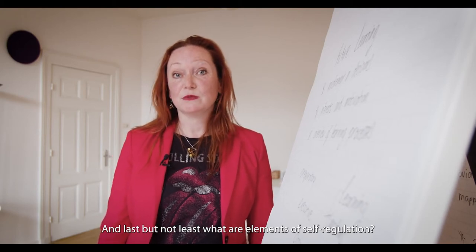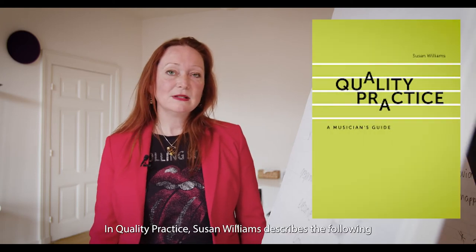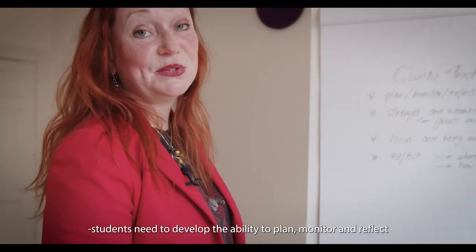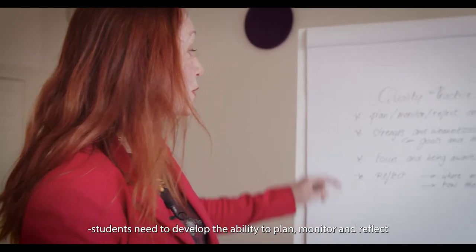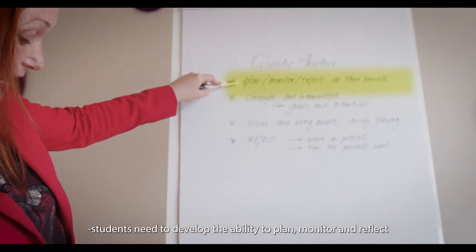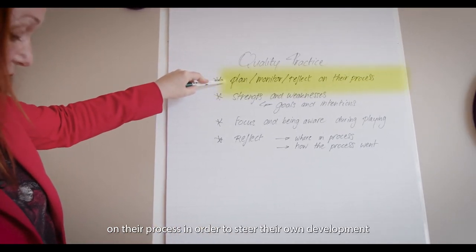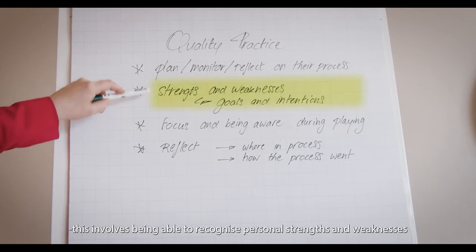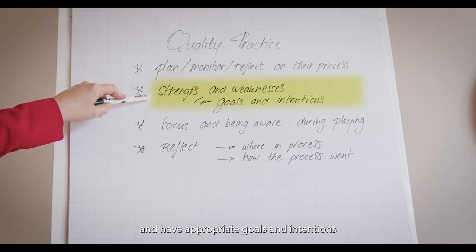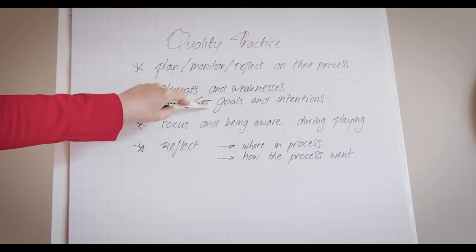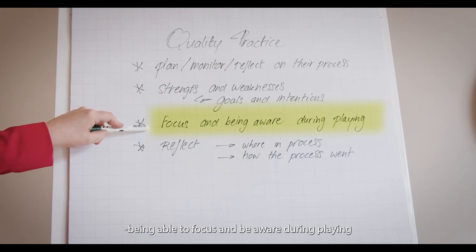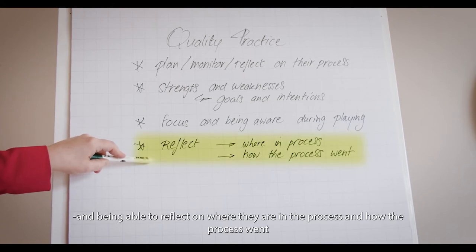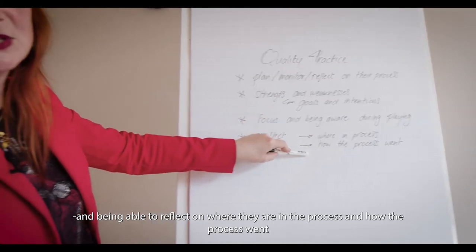And what are the elements of self-regulation? In Quality Practice, Susan Williams describes the following: students need to develop the ability to plan, monitor and reflect on their process in order to steer their own development. It involves being able to recognize personal strengths and weaknesses, have appropriate goals and intentions, being able to focus and be aware during playing, and being able to reflect on where they are in the process and how the process went.